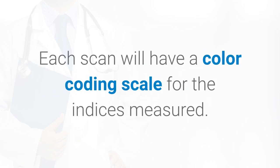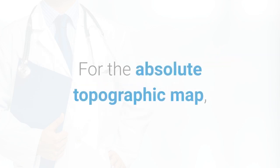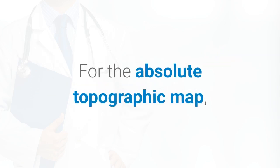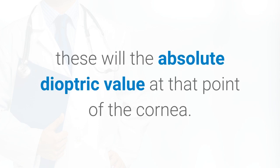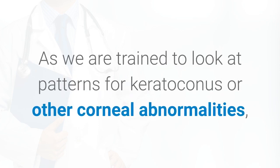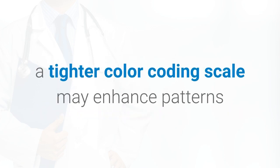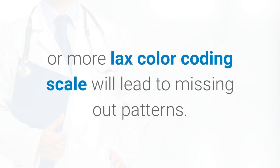Each scan will have a color-coding scale for the indices measured. For the absolute topographic map, these will be the absolute dioptric value at that point of the cornea. As we are trained to look at patterns for keratoconus or other corneal abnormalities, a tighter color-coding scale may enhance patterns, while a more lax color-coding scale may lead to missing out on patterns.